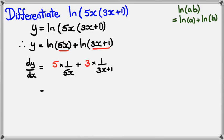Okay. Simplifying this further, I would get 5 divided by 5x plus 3 over 3x plus 1. Both of my 5s, they're going to cancel out each other, which leaves 1 over x plus 3 divided by 3x plus 1.